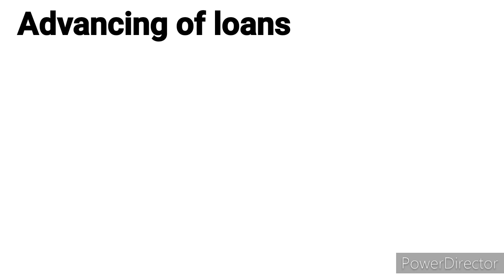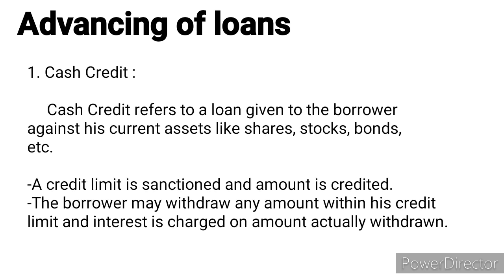There are different types of loans and advances made by commercial banks. The first is cash credit, which refers to a loan given to the borrower against his current assets like shares, stocks, bonds, etc. A credit limit is sanctioned and the amount is credited to his account. The borrower may withdraw any amount within the credit limit, and interest is charged on the amount actually withdrawn.